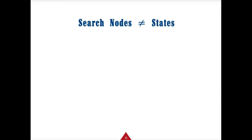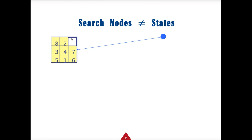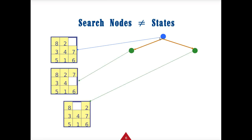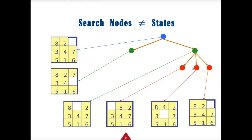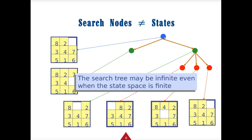Nodes do not equal states. We have an initial state, and then the node builds on to that with successor states and where we're going from there. A state is the current real-world condition, and a node is the data structure that tells us where we're going to go. You may have a finite number of states, but the paths we can go through different nodes could be infinite, especially if we can't find the goal state.